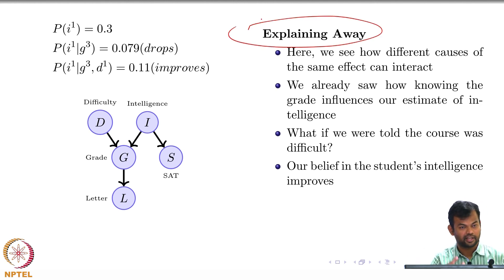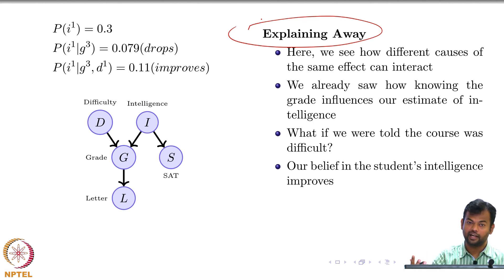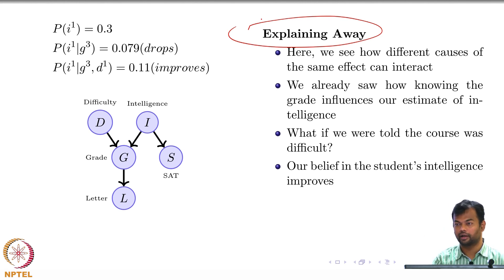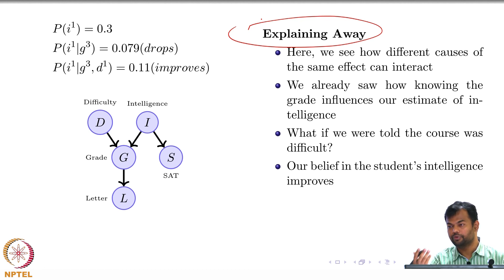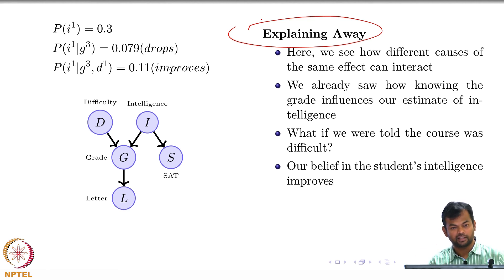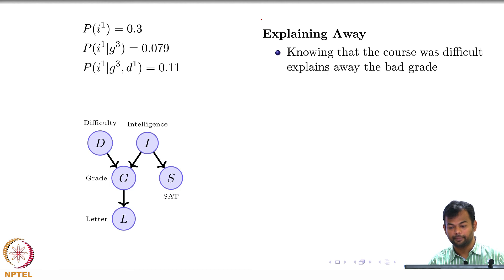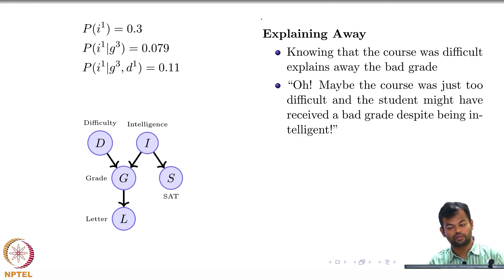There are various factors—in this case two—which could have caused the grade to be low. If I give you the explanation that the grade was low because the course was difficult, that explains away why the grade was what it was. So now intelligence does not have to be low to explain the poor grade—that is why the estimate of intelligence increases. Part of the responsibility for the poor grade lies with the difficulty of the course, not solely with the student's intelligence. This is explaining away.